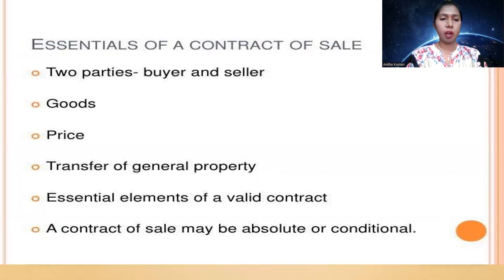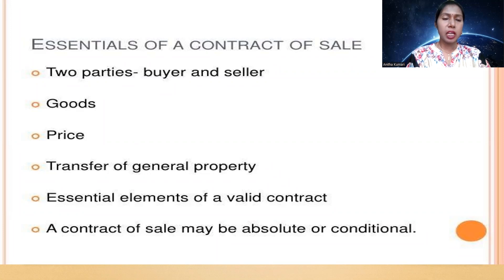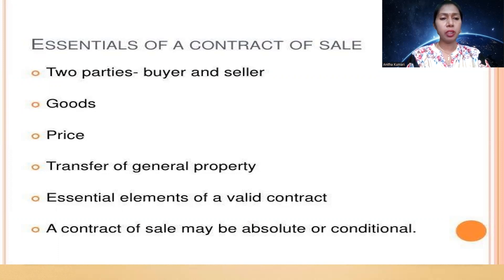Future goods are goods which will occur in the future. For example, farming products like ragi or paddy — you pay money initially and receive the goods after the crop is harvested. Contingent goods are goods which may or may not be delivered — for example, imported or exported goods that may or may not arrive due to laws or calamities. Under price, consideration in money is the key element. Unlike the Indian Contract Act 1872 where any consideration is valid, under the Sale of Goods Act, price only is considered as the consideration.